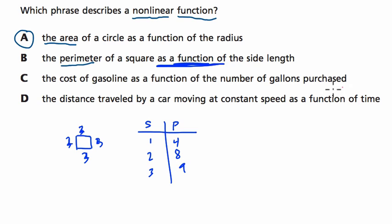And already, what you might notice is that this is linear. In other words, every time we increase the side length by one, the perimeter goes up by four. This is a constant rate of change, a constant slope. So here, it's a linear function.